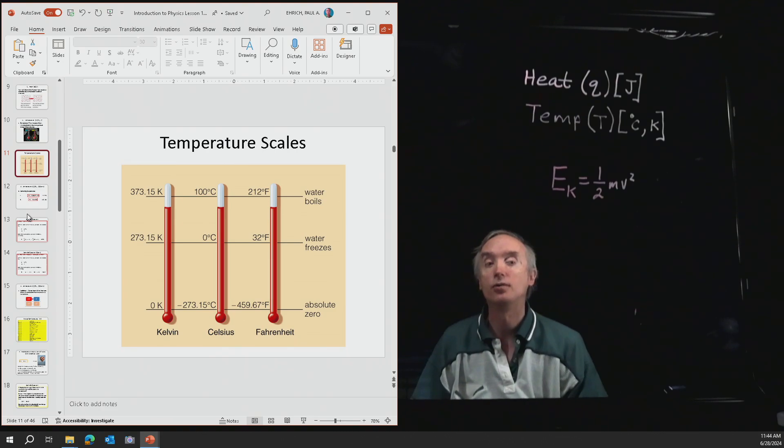Along comes the metric system. The metric system is based on the number 10, and they said, let's call the freezing point of water 0 degrees Celsius, and let's call the boiling point of water 100 degrees Celsius. So it's in units of 10. That's the metric system.